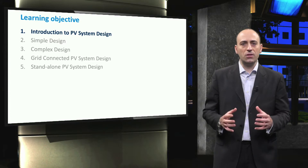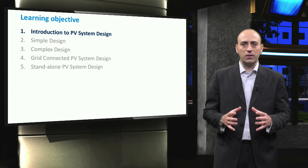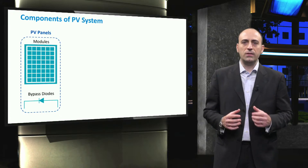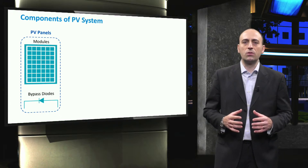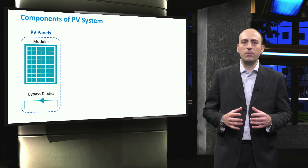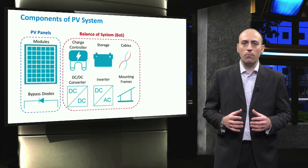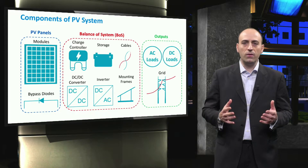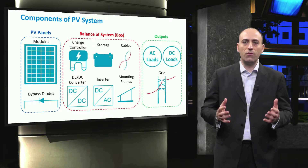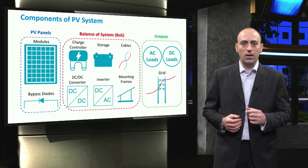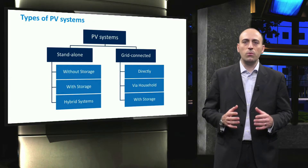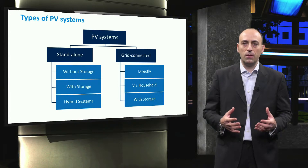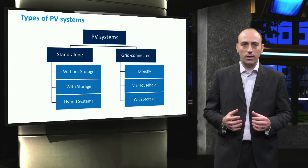This video serves as a basic introduction to a practical PV system design process. As seen in the previous weeks, PV systems comprise the PV panels, balance of system components such as charge controller, inverter, battery, cables, converters, mounting frames, and the outputs. In particular, we have learned in detail how the different components in a PV system operate with respect to one another.